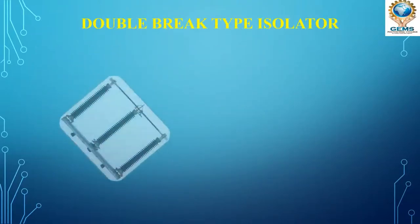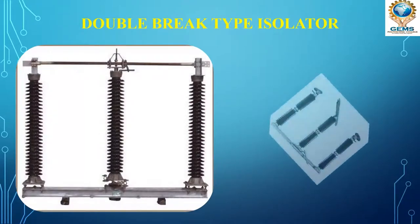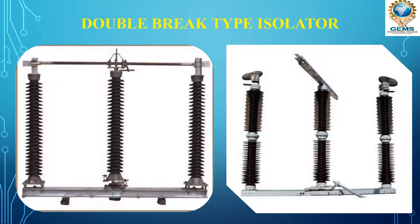Here you can see the diagram of the double break type isolator. Under normal conditions the rod is held in position. The rod connects to an arrangement on both sides, but in opposite directions — it rotates to open or close. From this lever we are going to switch it on and off.